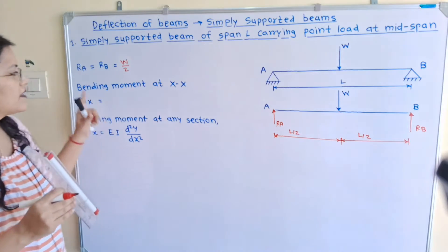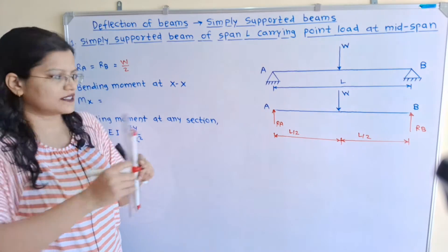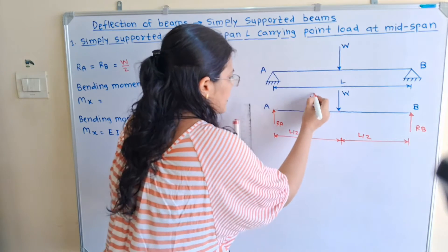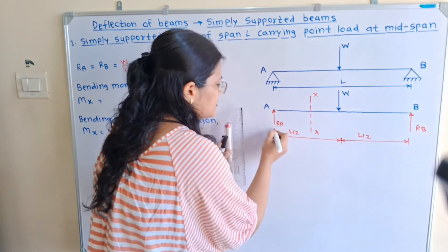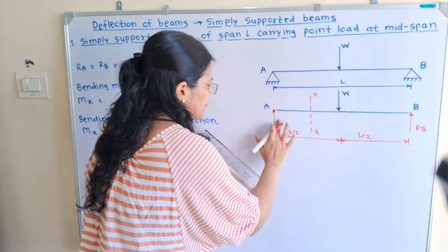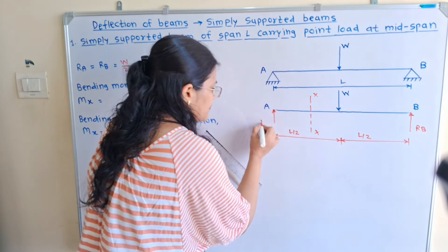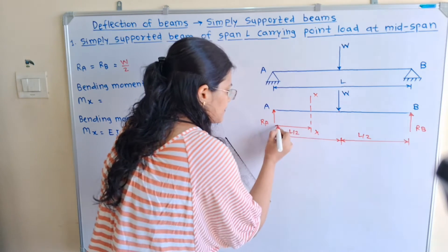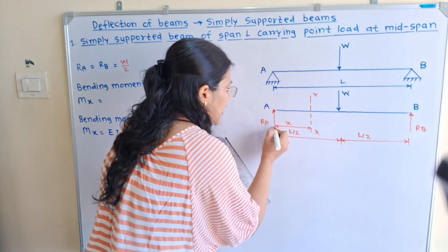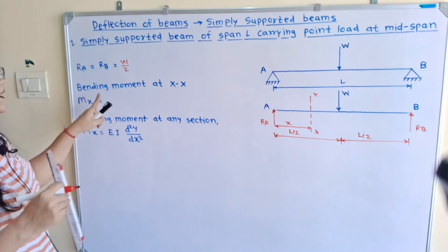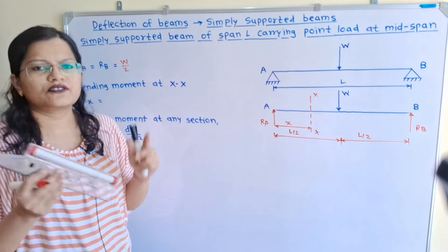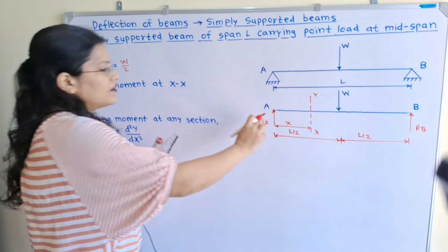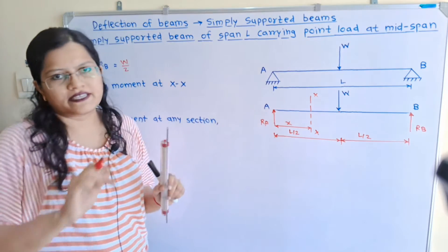We will consider any section XX at a distance small x from reaction RA. We have to find out the bending moment at this section XX.